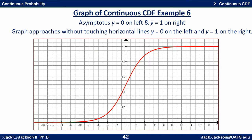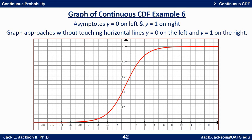A CDF could have a horizontal asymptote on both ends, where y stays between 0 and 1 exclusive — never actually hitting 0 or 1. This is actually a fairly typical shape for many distributions. For example the normal distribution and the t-distribution both have this basic shape: asymptote of y = 0 on the left, increasing the whole way with an inflection point, then leveling out toward an asymptote of y = 1 on the right.